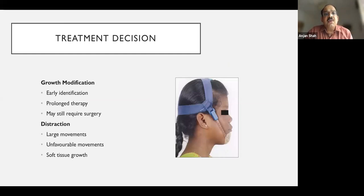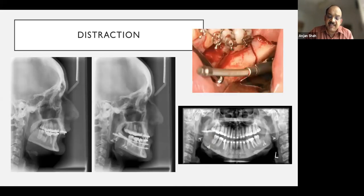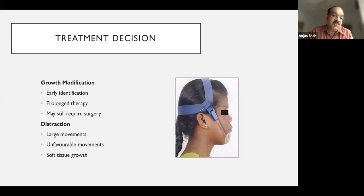Growth modification or functional appliances, if identified early, can sometimes reduce the need for surgery. A chin cap, for example, can help reorient mandibular growth. However, growth modification is often very prolonged, patients become non-compliant, and sometimes surgery is still required because facial growth is very difficult to control.